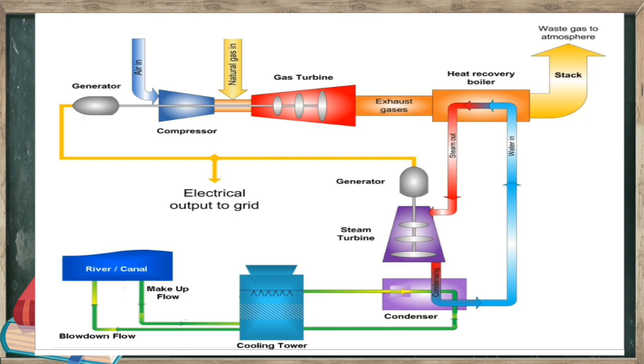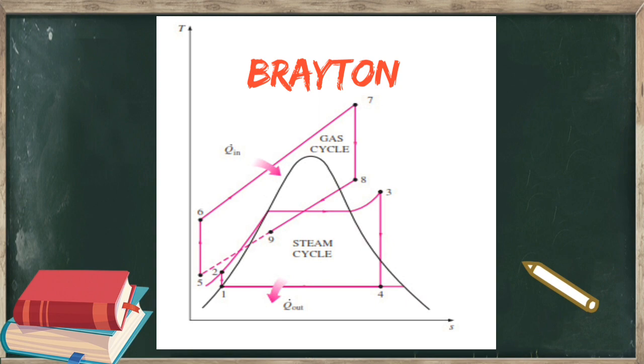Since it uses both gas and steam turbine, it consists of both Brayton and Rankine cycle.